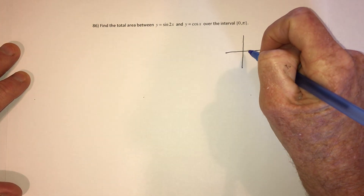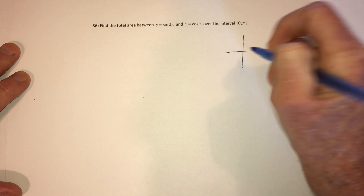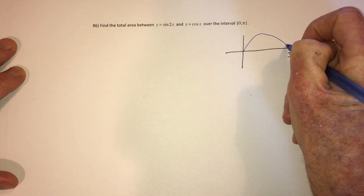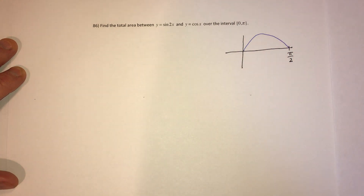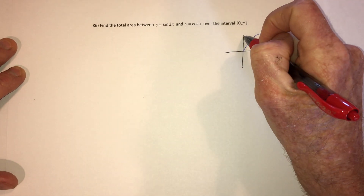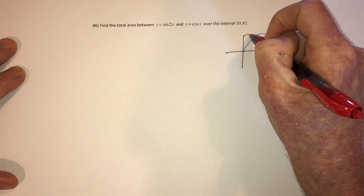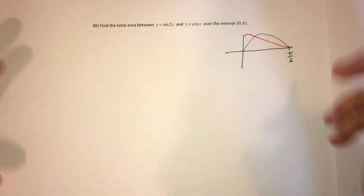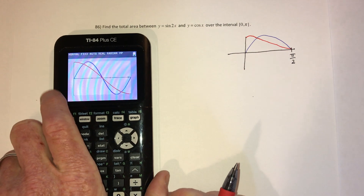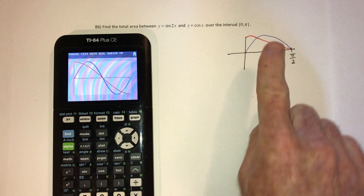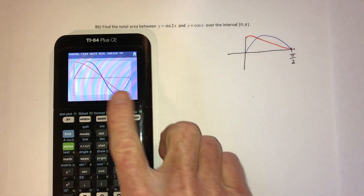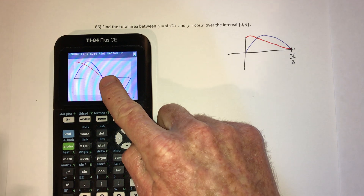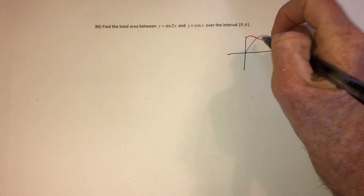One of them was the sine function and the red one was the cosine function. So the graph I just drew is supposed to represent that. Now find out where they intersect.